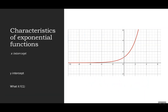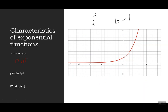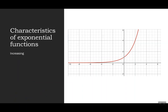Let's talk about characteristics of 2 to the x, which apply to any case where b is greater than 1. There is no x-intercept — the function never touches the x-axis. The y-intercept is at (0, 1), and that will be the same no matter what b is. If I plug in 1, I get b to the 1, which equals b. This function is only getting bigger reading from left to right — it's increasing.